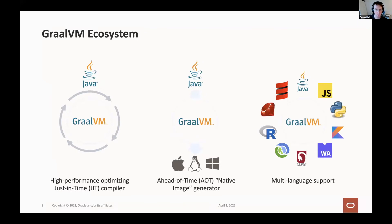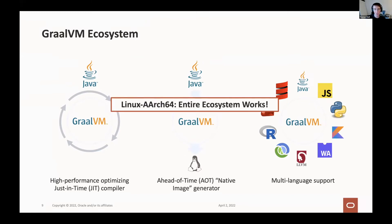GraalVM can be used as a compiler within HotSpot, an ahead-of-time executable generator for Java applications, and also has via Truffle a language interpreter framework that currently supports many different frontends. Currently on Linux, all of GraalVM works on ARM. Some things like Sulong, the LLVM bytecode interpreter, or Truffle strings may be less optimized right now, but everything should be functional.